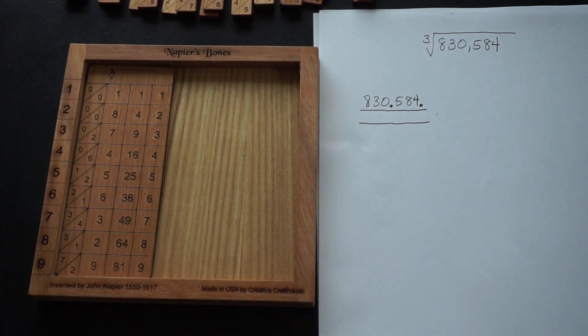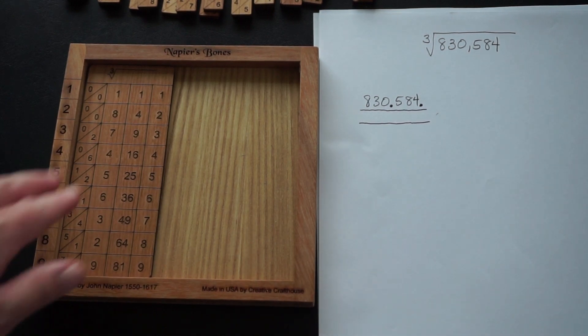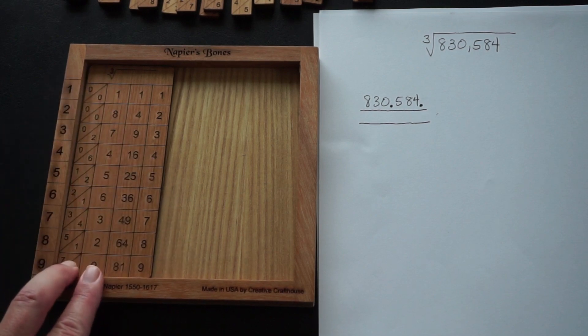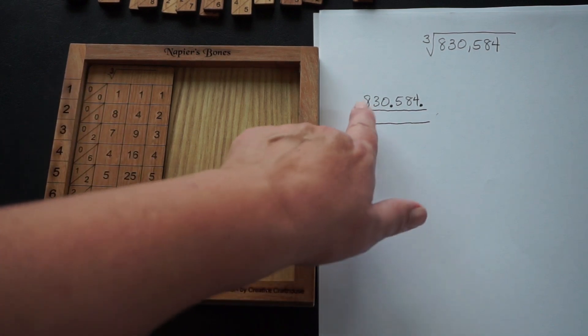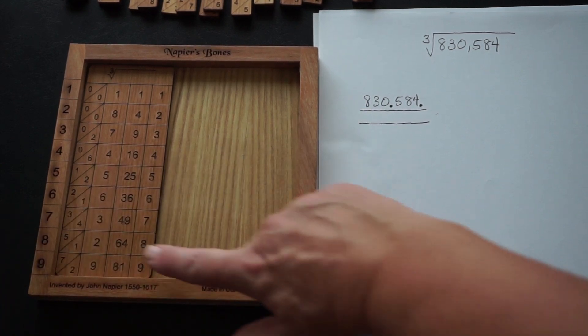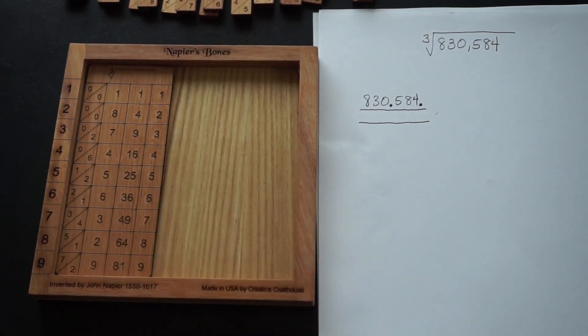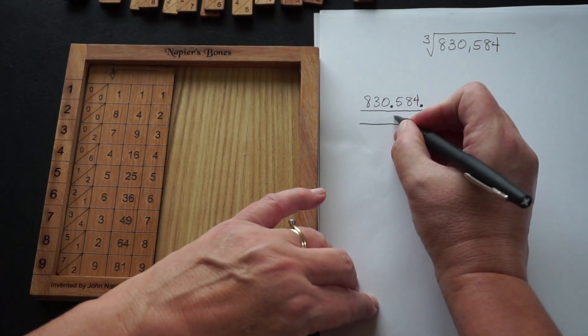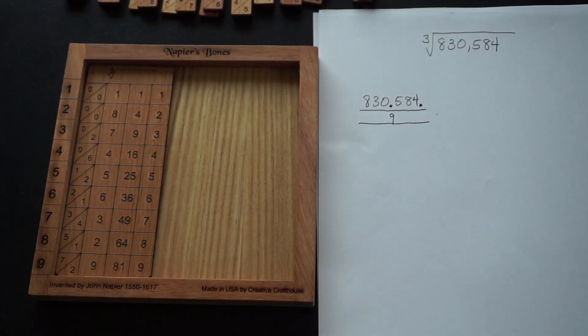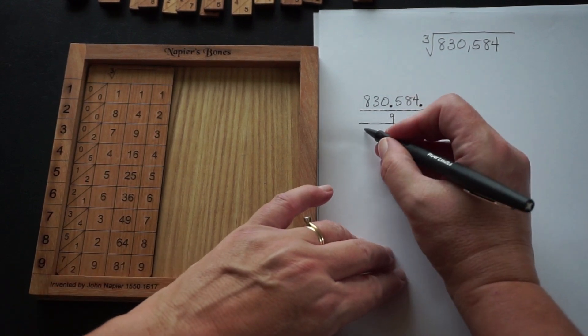The first step is to begin with the triplet farthest to the left and look at our cube root rod. We're going to be looking at the first two columns here and look for the number closest to 830 without going over. That's here in row nine, which is 729. So this came from row nine, which I'm going to put here as the first part of my answer. It goes directly beneath the first dot.